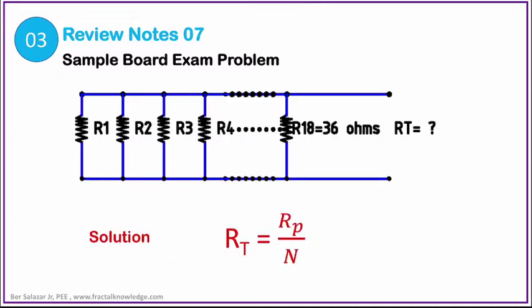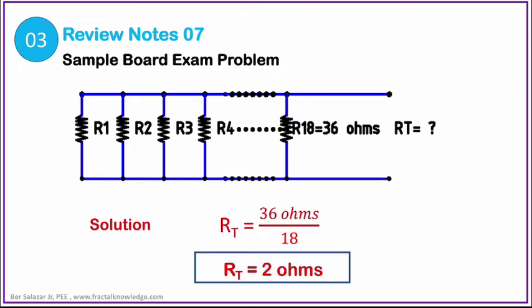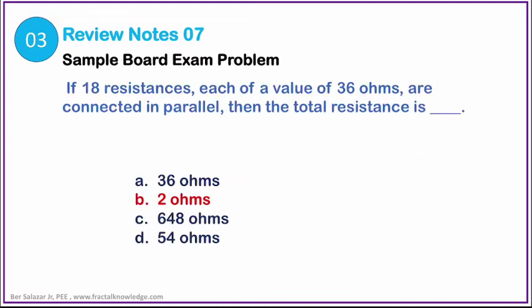The total resistance is equal to the value of the resistance in parallel divided by N, or the number of total connected resistances. Substituting the values to the formula, we have 36 ohms divided by 18 equals 2. The total resistance of the given circuit is 2 ohms. In the choices given in the problem, our answer is letter B, 2 ohms.